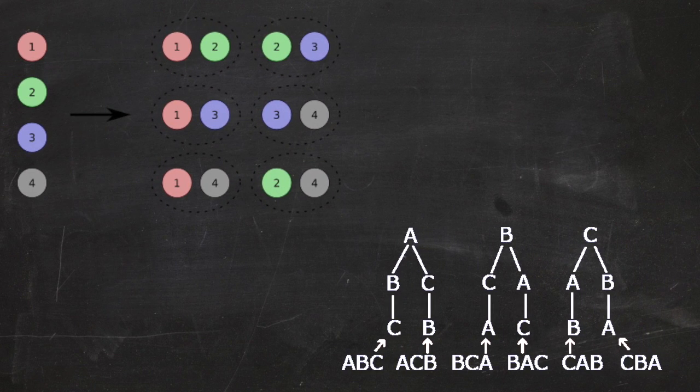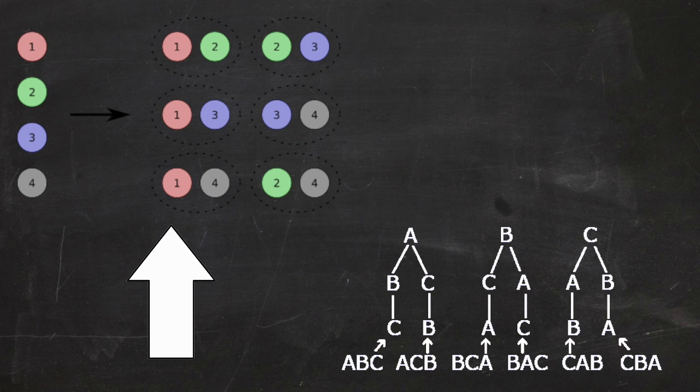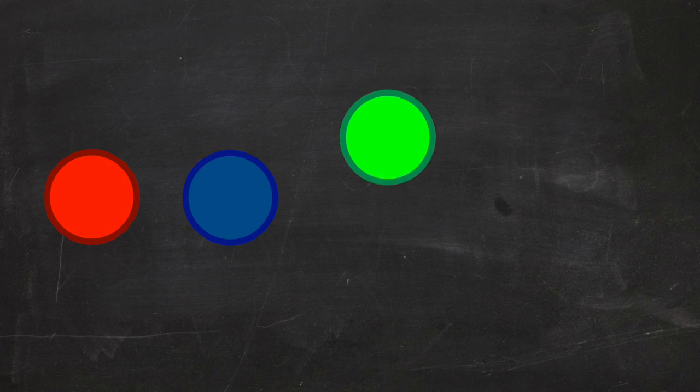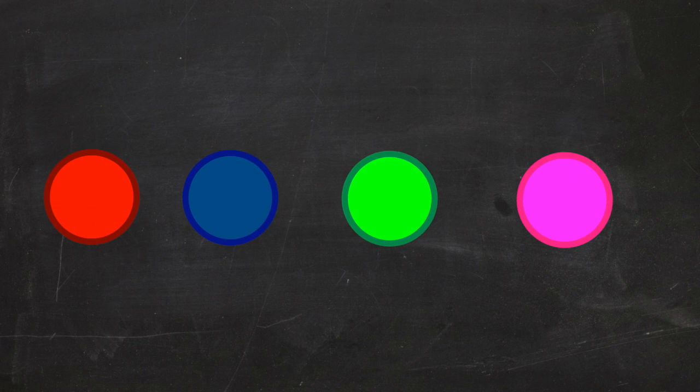There are mathematical operations known as combinations and permutations. How many different ways can you organize a bunch of something? For example, if you have red, blue, green, and pink, how many different ways can you order them?